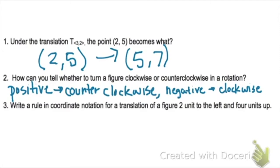A rule for the coordinate notation for the transformation of 2 to the left and 4 up. To the left means negative, so it's going to be negative 2, and 4 up means positive, so it's going to be a positive 4.